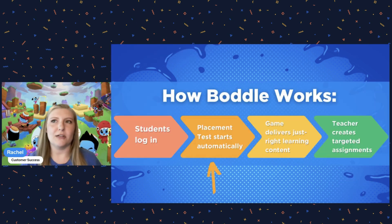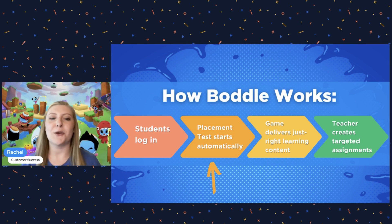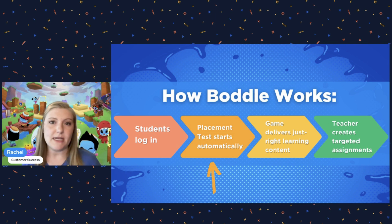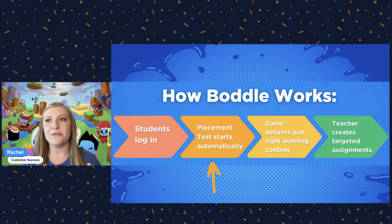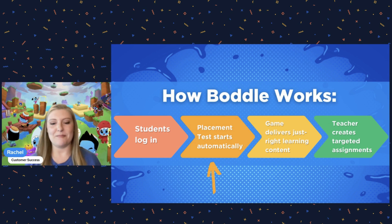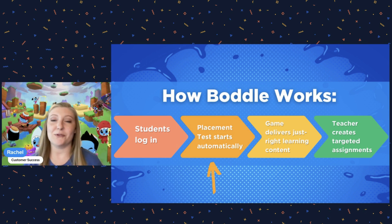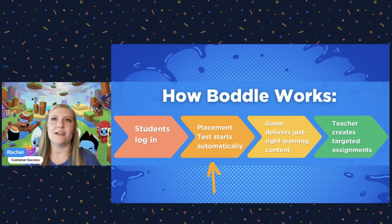So how Bottle works — it looks very complicated on the site when you log in, but it's really very straightforward. Students log into their accounts, and from there we automatically start every kid off with a placement test to determine the skills they've mastered and the ones that still need work. This is confusing to a lot of educators because we're used to giving students a test with a start button. That's not exactly how the placement test looks on Bottle — our goal is for students to not really know they're taking a test. We want them to feel like they're having fun and playing a game.